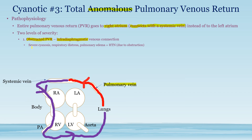In the obstructed form, patients get severe cyanosis, respiratory distress, pulmonary edema, and hypertension. The obstruction of the systemic vein due to the infradiaphragmatic connection causes backup of blood, leading to pulmonary edema and hypertension from increased hydrostatic pressure, and cyanosis because less blood reaches systemic circulation. In the non-obstructed form, there is only very mild cyanosis with some shortness of breath.